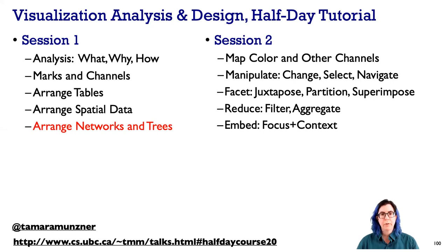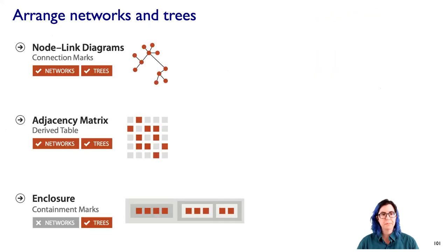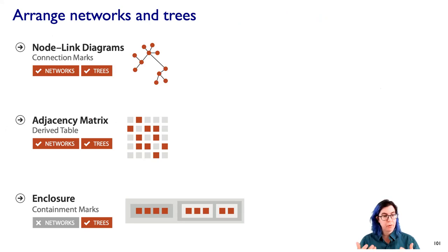Let's talk about arranging spatial positions for networks, which includes trees. There are three major ways to think about laying out networks: node-link diagrams, which work for both networks and trees; adjacency matrices; and finally enclosure, where we use containment marks, which is exclusively for trees.